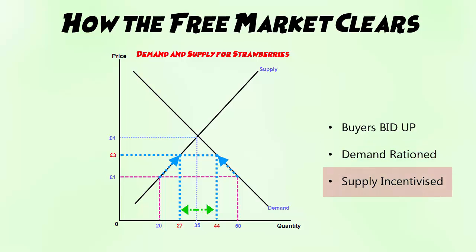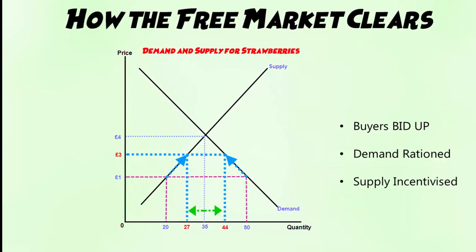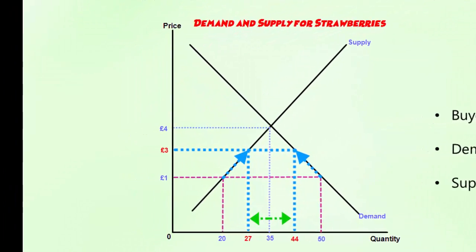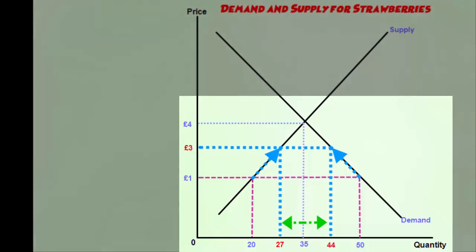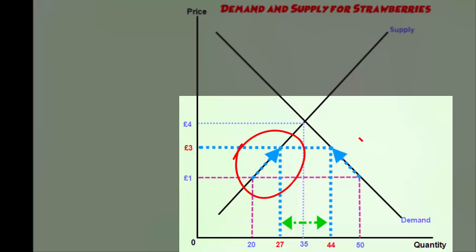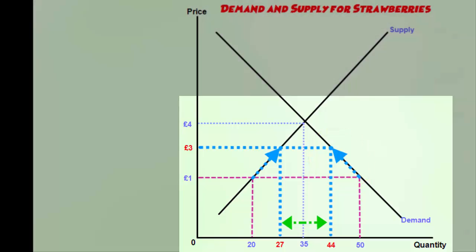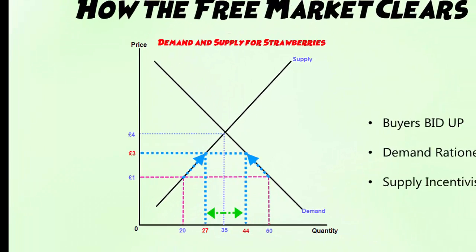At the same time, supply is also incentivised because at a higher price, suppliers are going to make a greater amount of profit. So more suppliers will be willing to enter the market now that they see the price for this product is going up and that there's demand for it. On the graph, we started with an excess demand of 30 — 50 demand compared to 20 supply at the price of £1. Through the bidding up and rationing of demand, and the incentivising of supply, supply has expanded from 20 to 27, and demand has contracted from 50 to 44 as the price has risen. So now we've only got a 17-unit excess demand and we're closer to market clearing at equilibrium price.